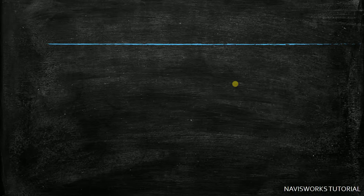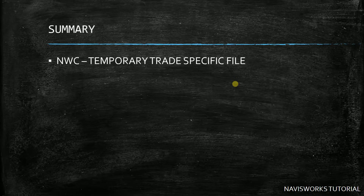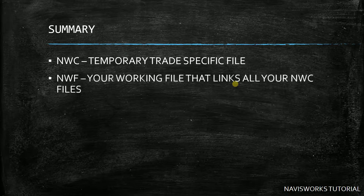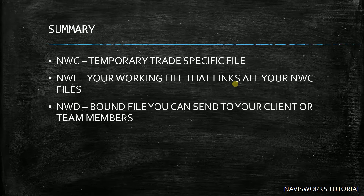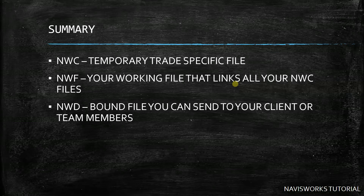As a summary: NWC is the temporary trade-specific cache file; NWF is your working file that links all your NWC files; and NWD is the bound file you send to your client or team members because all the data is included. Those are the three main Navisworks file types.